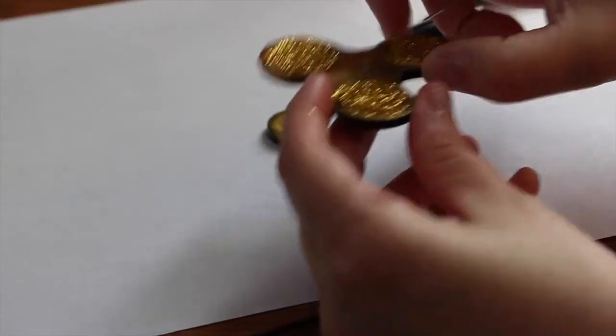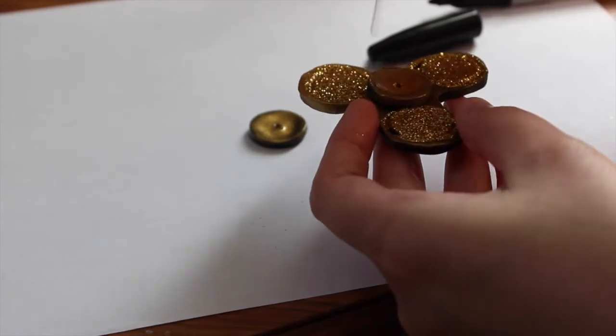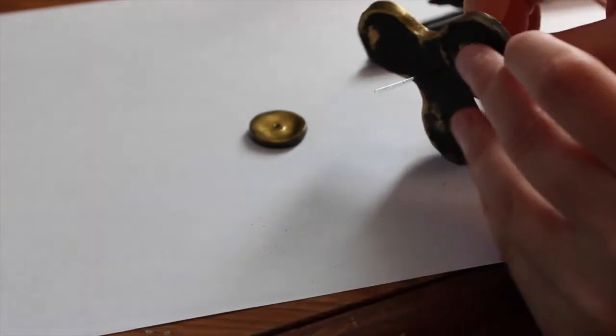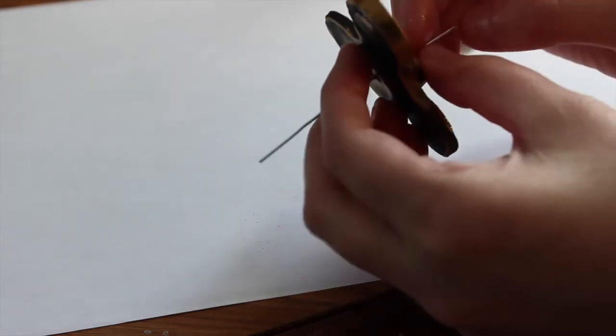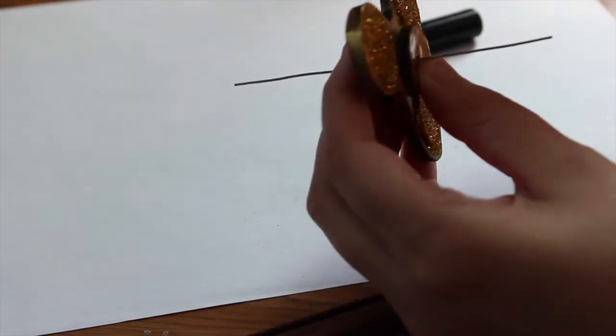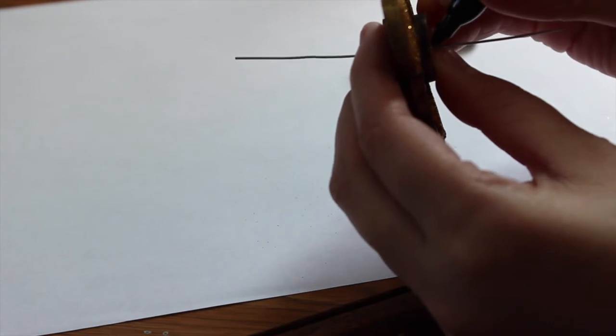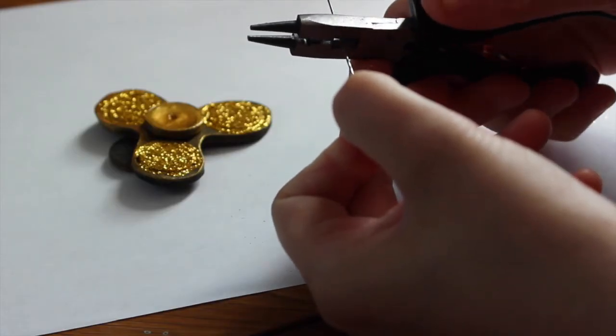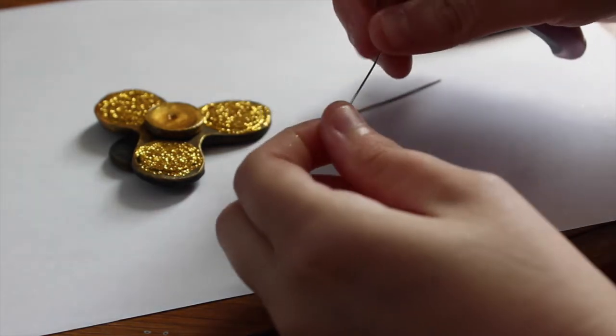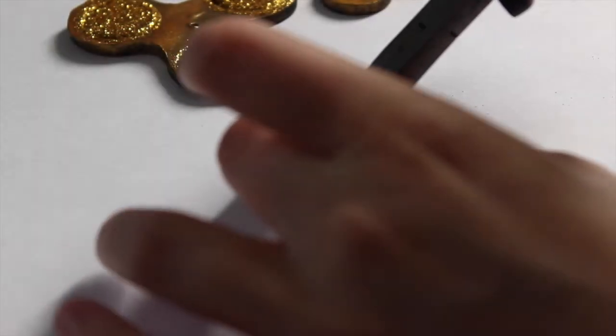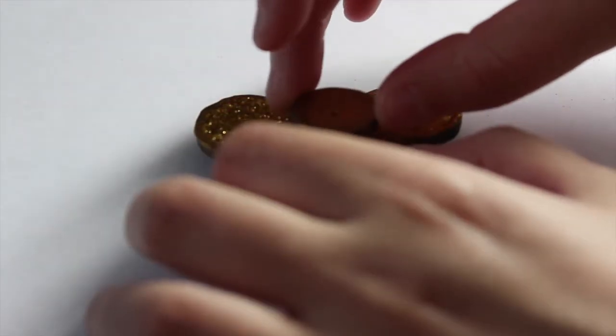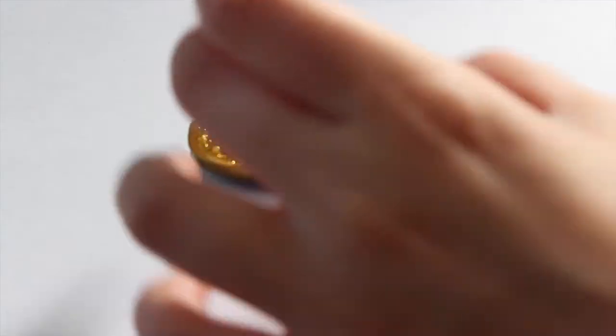Once they're dry, you're going to just tap off the excess glitter and it should look something like this. So now I'm going to assemble the actual spinner. I'm just taking a paper clip that I straightened out and I'm just putting all the pieces together. You're gonna put one of the thumb hole things, one of the circles on the back, one on the front. You're gonna make sure it spins - these spin pretty well when they were like that. Now I'm taking a Sharpie and I'm just marking off where I'm gonna cut with my pliers later on. You want it to fit exactly in the spinner.